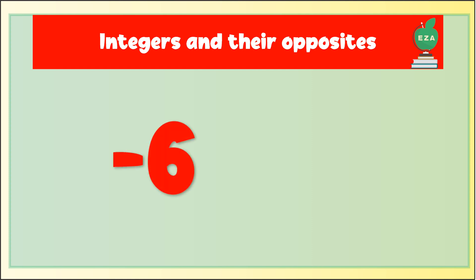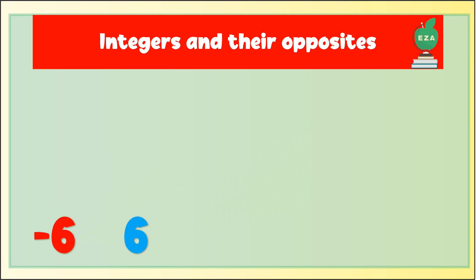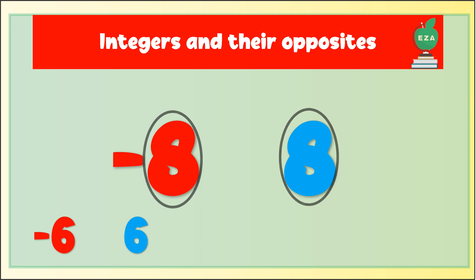Let's take a look at the number negative six. What is its opposite? If you guessed six or positive six, you guessed correct. They both have the same number six with different signs. Let's take a look at the number negative eight. What is its opposite? If you guessed eight or positive eight, you guessed correct. They both have the same number eight with different signs.